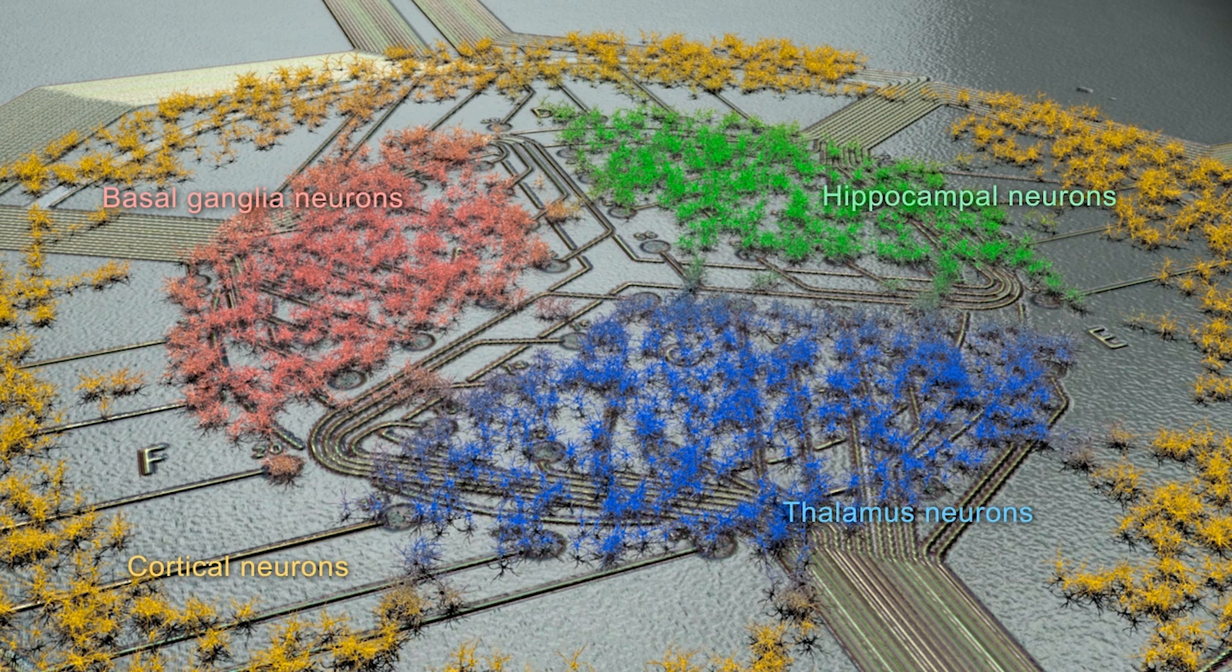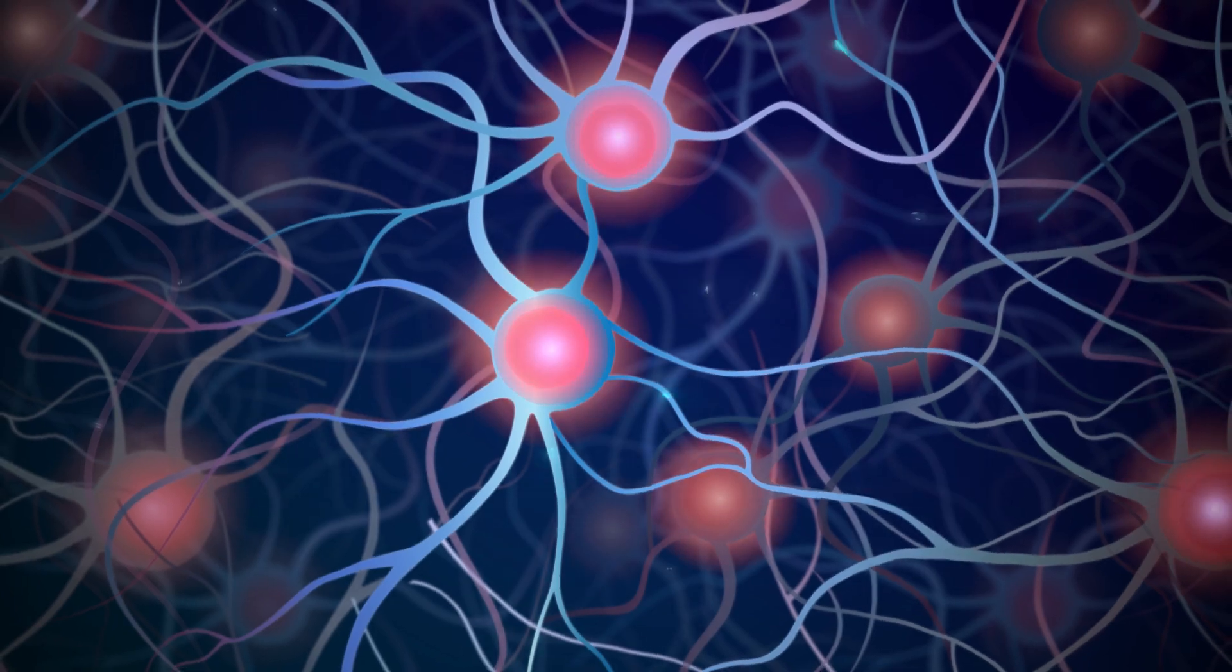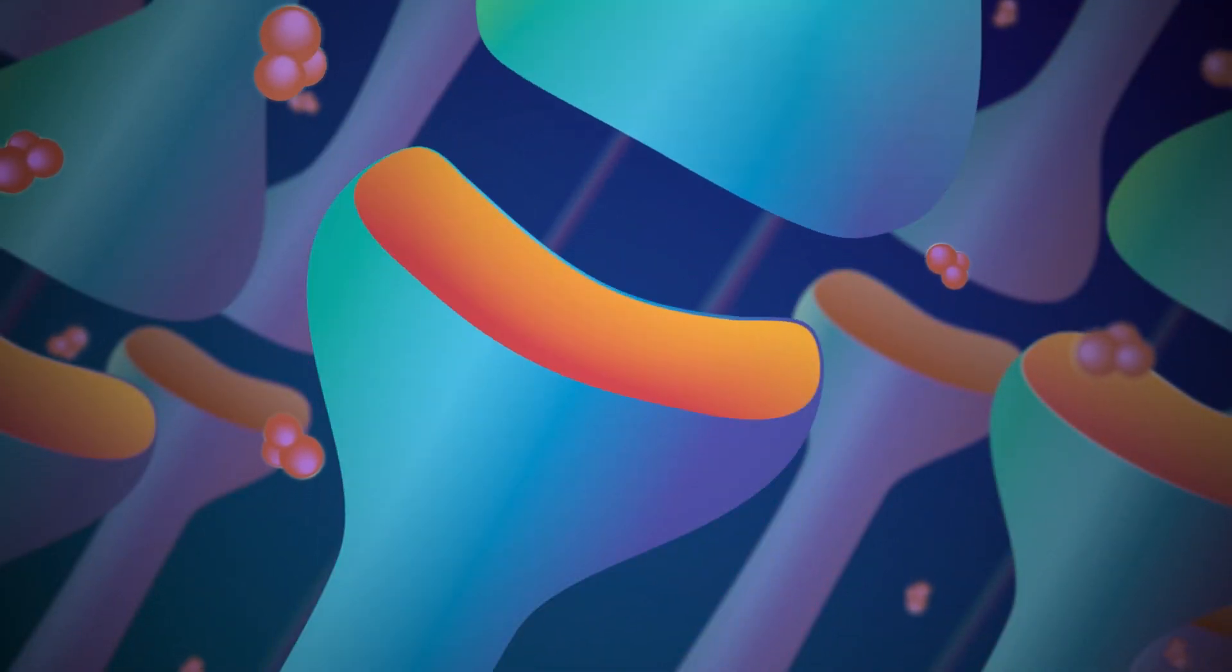This is essential so we can understand how adding a chemical compound or therapeutic affects how neurons communicate. Understanding how they talk to one another and how that's disrupted, especially in the context of human cells, allows us to develop better countermeasures and therapeutics.